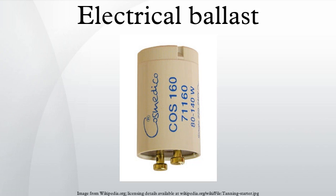Early tube-based color TV sets used a ballast triode, such as the PD500, as a parallel shunt stabilizer for the CRT acceleration voltage, to keep the CRT's deflection factor constant.